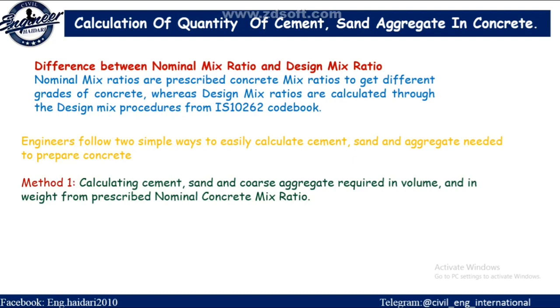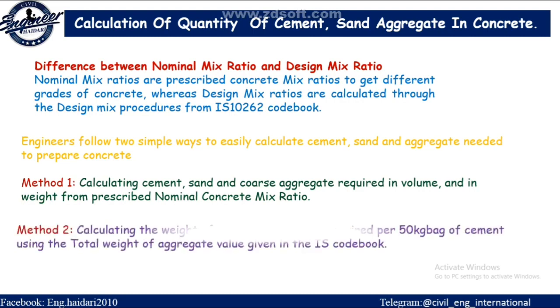Method 1: Calculating cement, sand, and coarse aggregate required in volume and in weight from prescribed nominal concrete mix ratio. Method 2: Calculating the weight of sand and aggregate required per 50 kg bag of cement using the total weight of aggregate value given in the IS codebook.